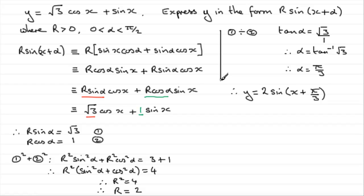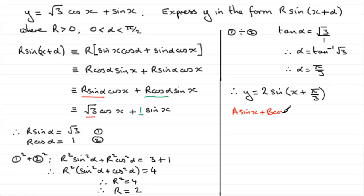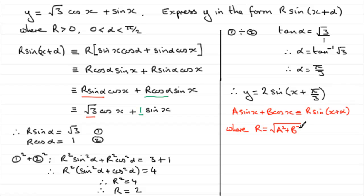So what I'd suggest is that you learn the quicker way. On my website you'll find identities for things like this. The key identity is: a sine x plus b cos x is identical to r sine of x plus alpha, where r equals the square root of a squared plus b squared, and alpha equals the inverse tan of b over a.